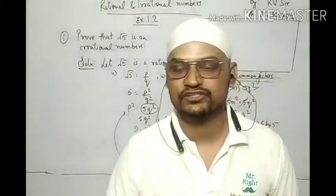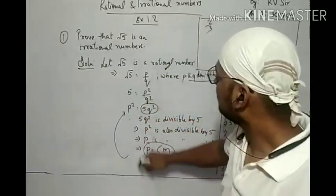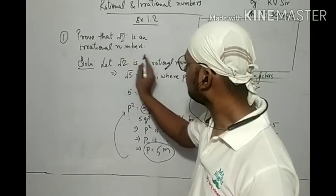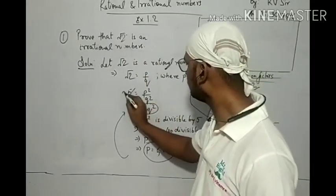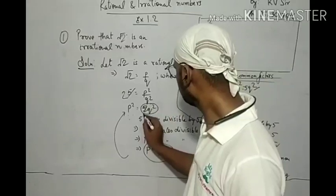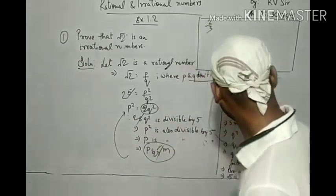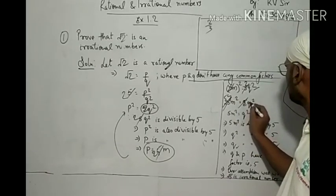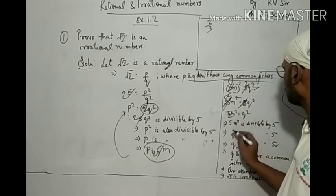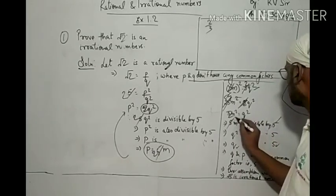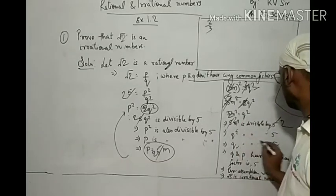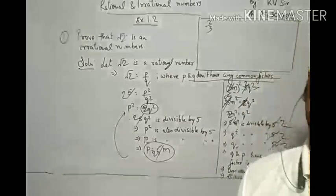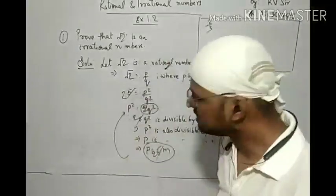So root 5 is an irrational number. Similarly, if we replace 5 with 2, we follow the same procedure — 2 will replace 5 throughout, giving 4m² equals 2q², leading to 2m² equals q squared. You can put 2, 3, 7, 11, or any prime number and follow the same procedure.